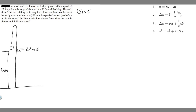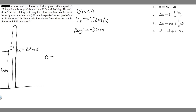Let's write down what we're given. The initial velocity v₀ is equal to 22 meters per second. Writing out all your variables makes it easier to solve. We also know that the change in y, delta y, is going to be minus 30 meters. The reason is the rock starts at height 30 and ends at zero, so delta y equals final position minus initial position, which is zero minus 30, giving us minus 30.